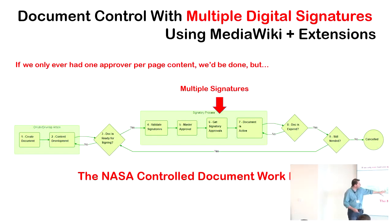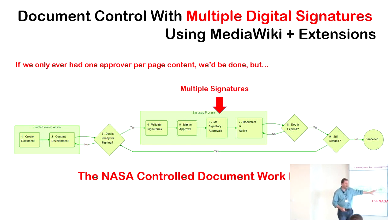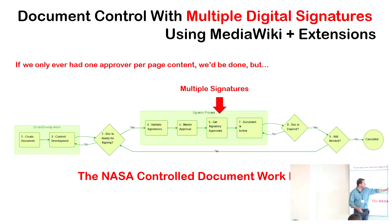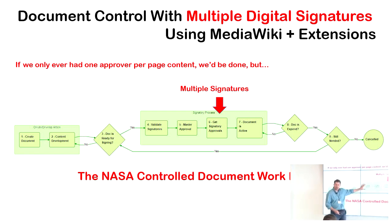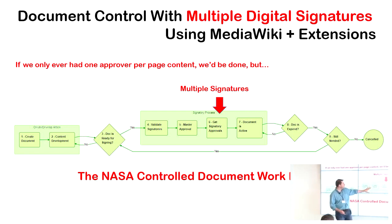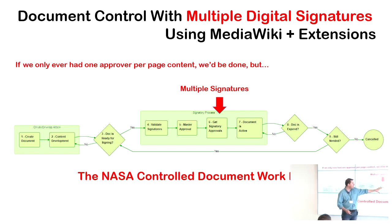If the document is ready for signing, the first step is to validate the signatories — we need to make sure we have the right people signing. Once we know who we want, we have the choice of signatories approved. Once the choice is approved, we go get the signatures. Once signatures are in place, the document is live.